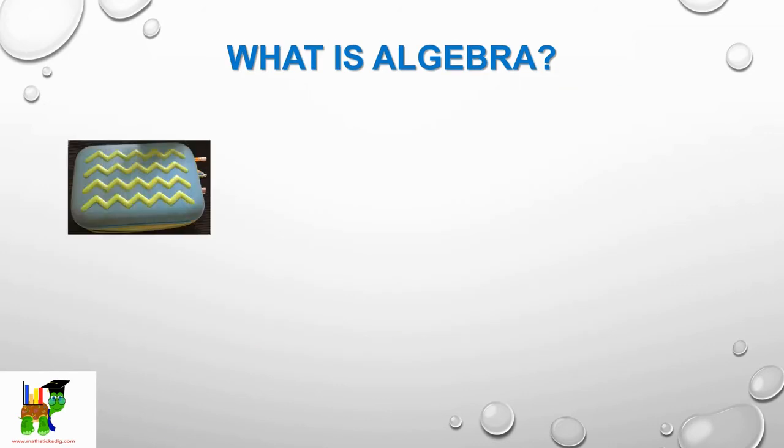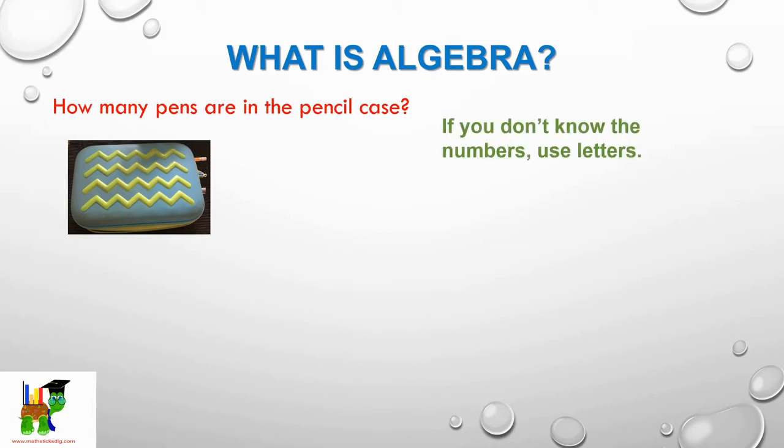Now let's have a look at this pencil case. How many pens are in the pencil case? Well, we don't really know unless we open the pencil case and count them. So if you don't know the numbers, use letters. In this case, we let p equal the number of pens. So p is the number of pens in the pencil case.